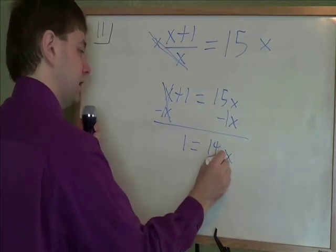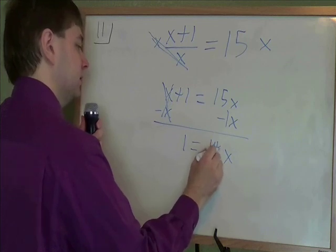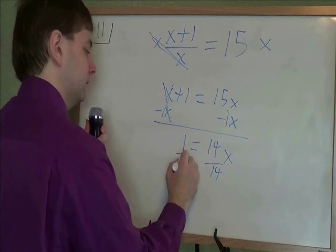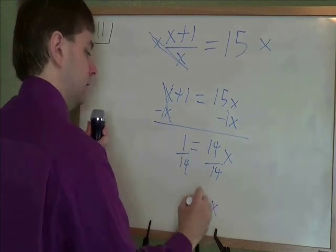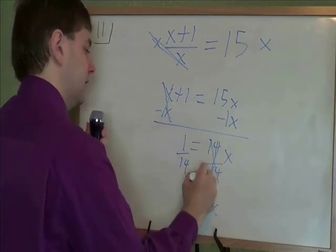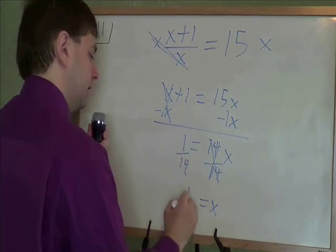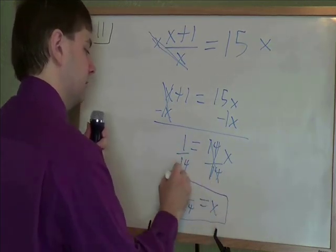Not done yet, still need that x completely by itself. To do that, we need to get rid of that times 14. To get rid of times 14, you divide by 14. 14's cancel, you're left with 1 over 14. And that is your answer for this problem.